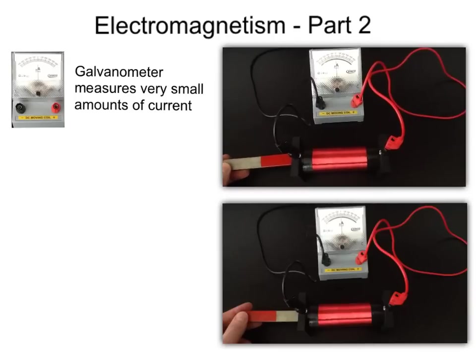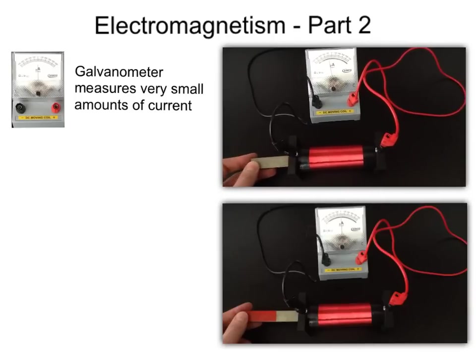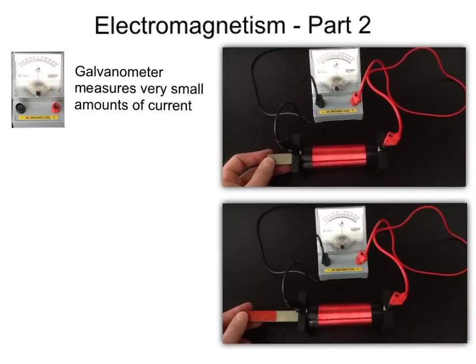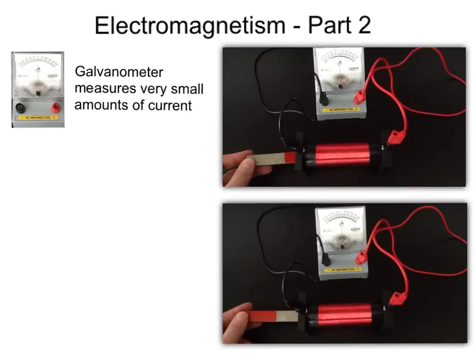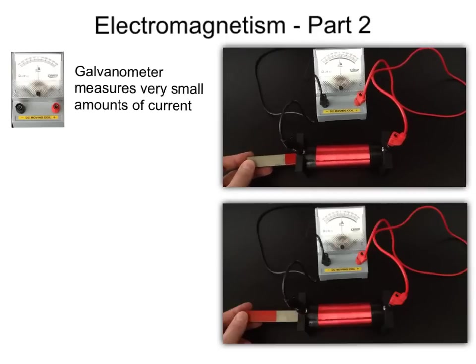Here we can see that that moving magnet creates electricity. And if you notice carefully, if the magnet is not moving, there is no current flowing, and hence no reading on the galvanometer.